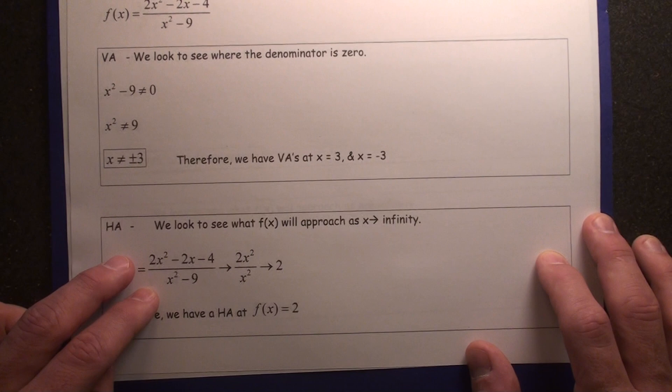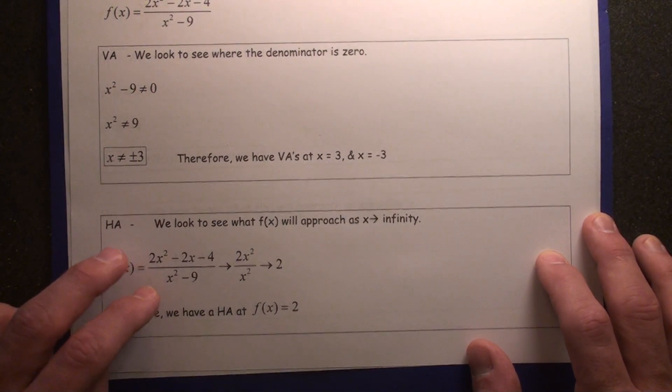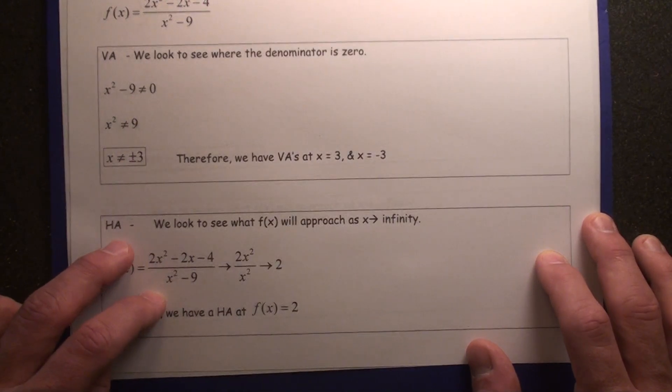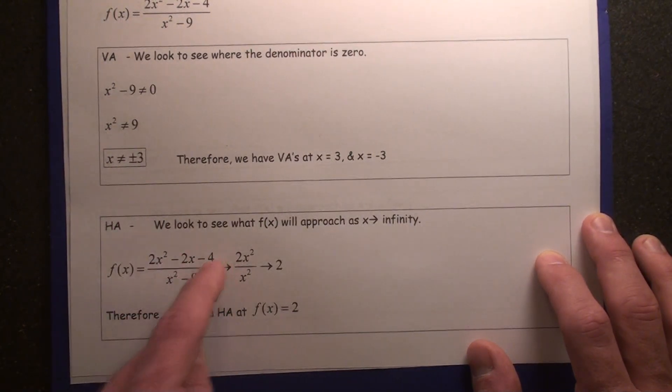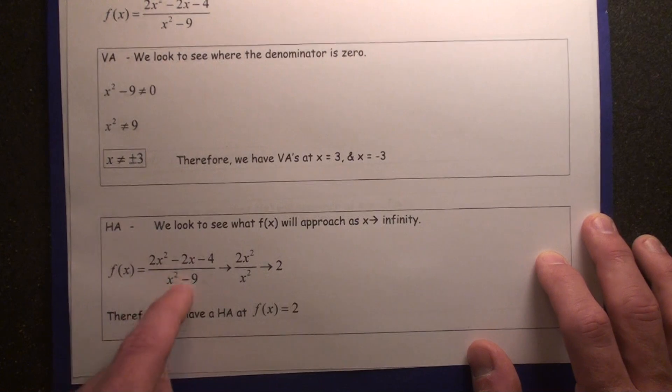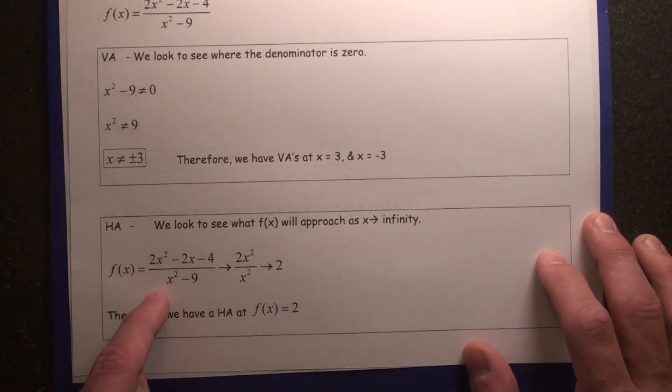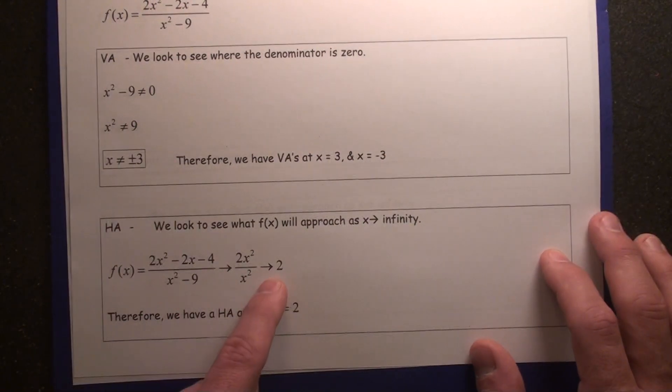Just think about the number 10. If you plugged in 10 here, you're going to get something close to 2 because the 4 and the 2x aren't really going to bring this value of 200 down that much, and the 9 is not really going to bring this 100 value if you use 10 here. Therefore, we would say f of x approaches 2.